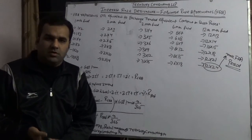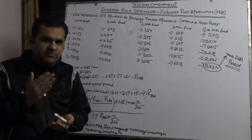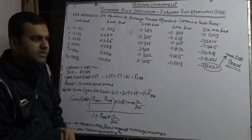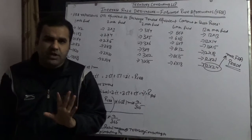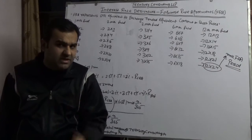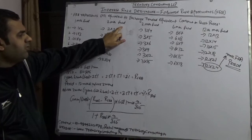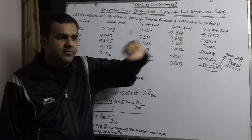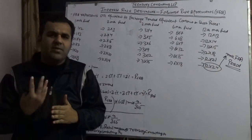Forward rate agreements run up to 12 months — one month, two months, three months, four months, up to 12 months. In FRA we don't say '12 months'; we use technical terms like one-month forward, two-month forward, three-month forward, six-month forward, and twelve-month forward.